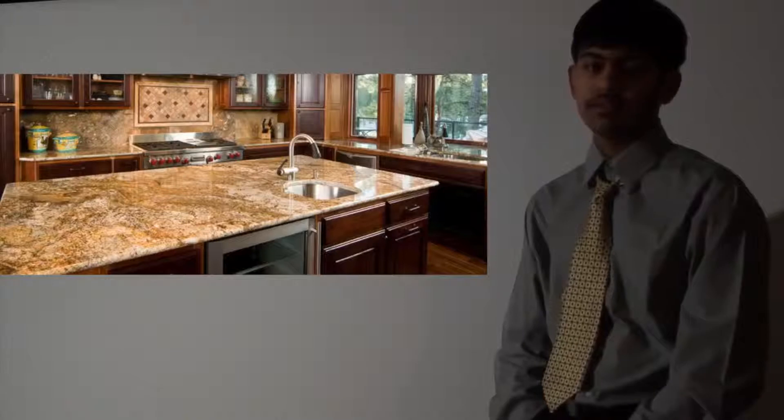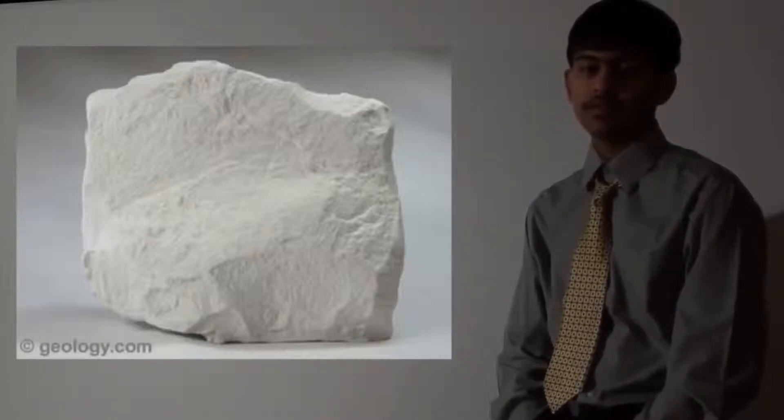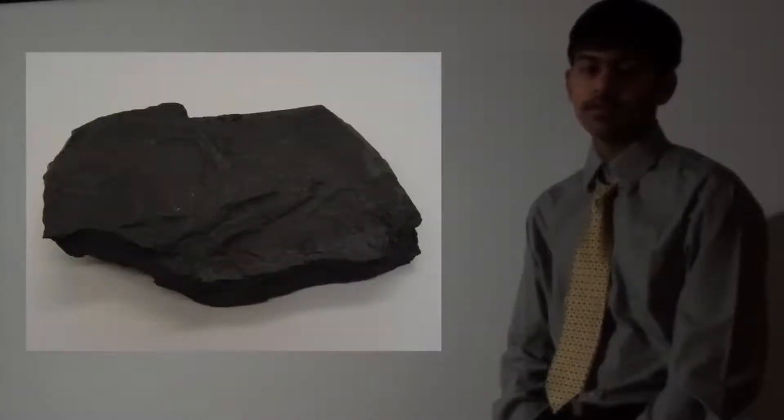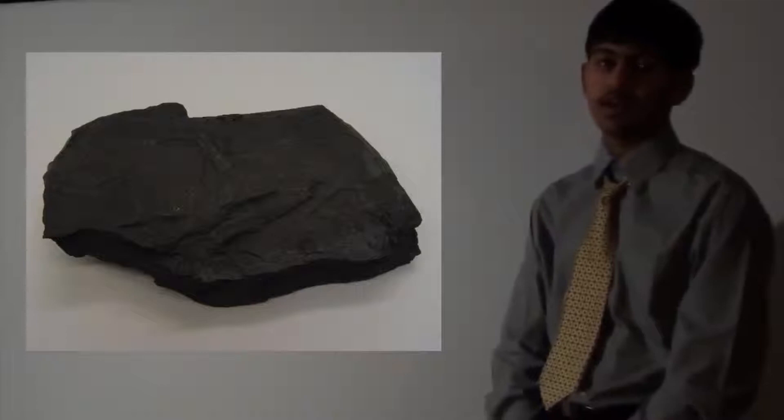There can be intrusive igneous rock, where magma cools under the surface of the Earth and has lots of crystals — an example is granite, which can be used to make countertops. There is also extrusive igneous rock, where magma cools above the surface and has very little or no crystals — an example is basalt, which can be used for asphalt pavement and road bases. An example of a sedimentary rock is limestone, which can be used as an ingredient for toothpaste, glass making, and making brake pads. An example of metamorphic rock is shale, which can be used for cement, bricks, and concrete.